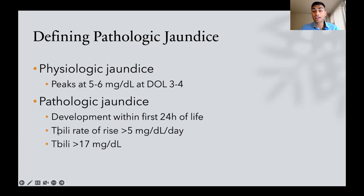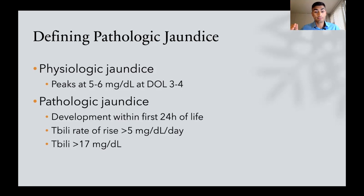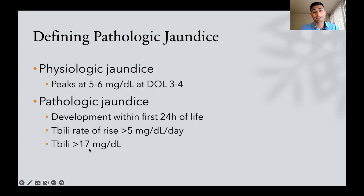Secondly, if the total bilirubin rate of rise — that means how much that bilirubin level is rising each day — rises by more than five milligrams per deciliter per day, that is indicative of some sort of pathologic process. And lastly, if the absolute level of bilirubin is greater than 17, that's also suggestive of some disease process.